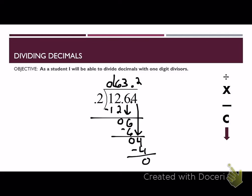We need to go ahead and make sure we have our answer at the top, and it would be 63.2. That is your answer for the first one, or 63 and 2 tenths. Let's move on to the next example.